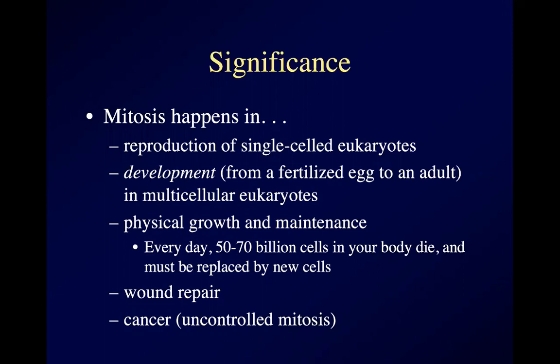Somebody actually calculated that the number of cells you lose each year is roughly equivalent to your own body weight. So you make a whole new body's worth of cells every year of your life — which is kind of a neat fact to trot out at parties. Mitosis is also important in repairing damage — if you get a cut on your skin, mitosis is what makes the new cells that grow together and end up sealing off the cut.